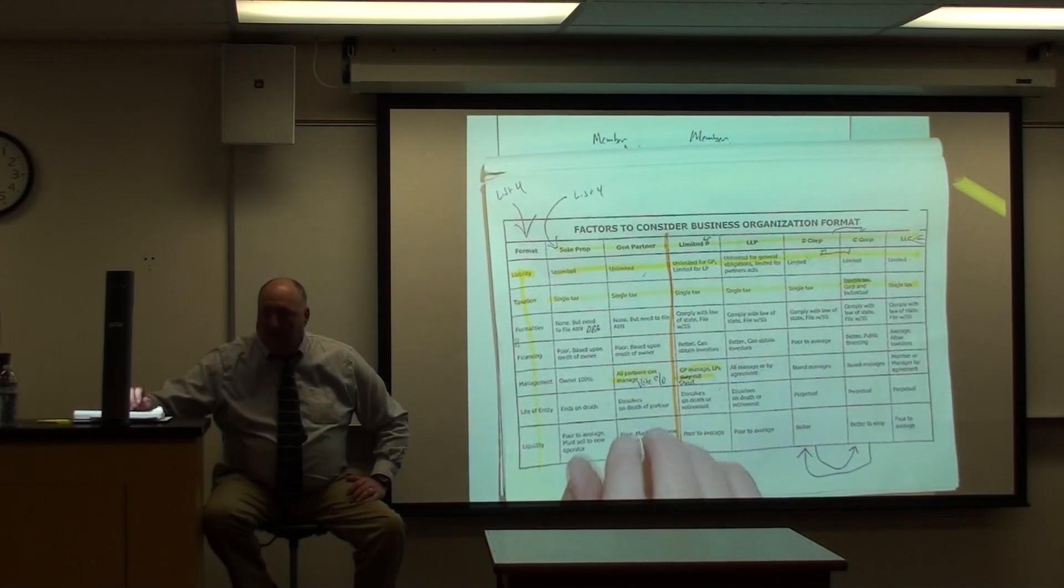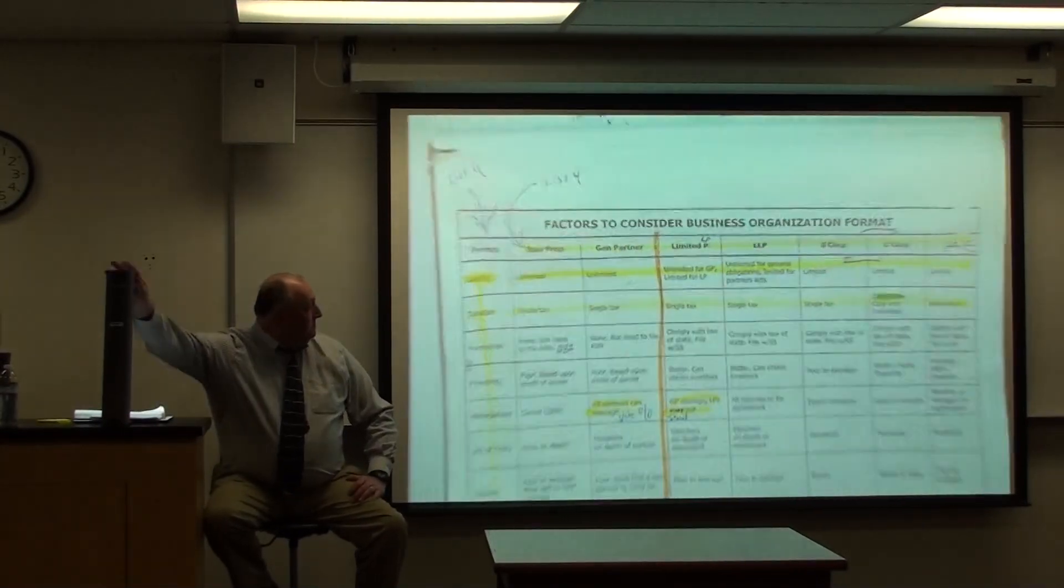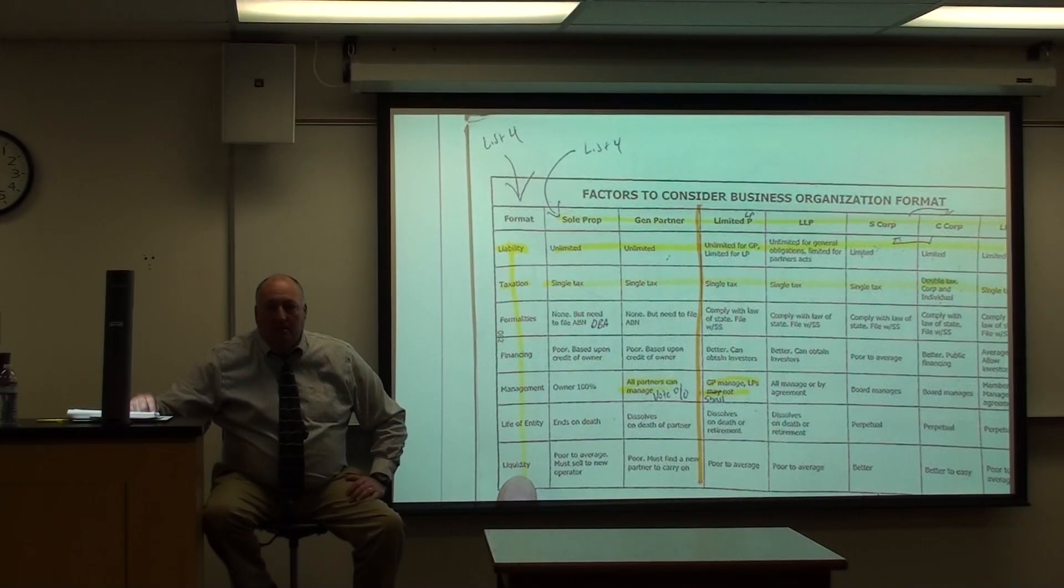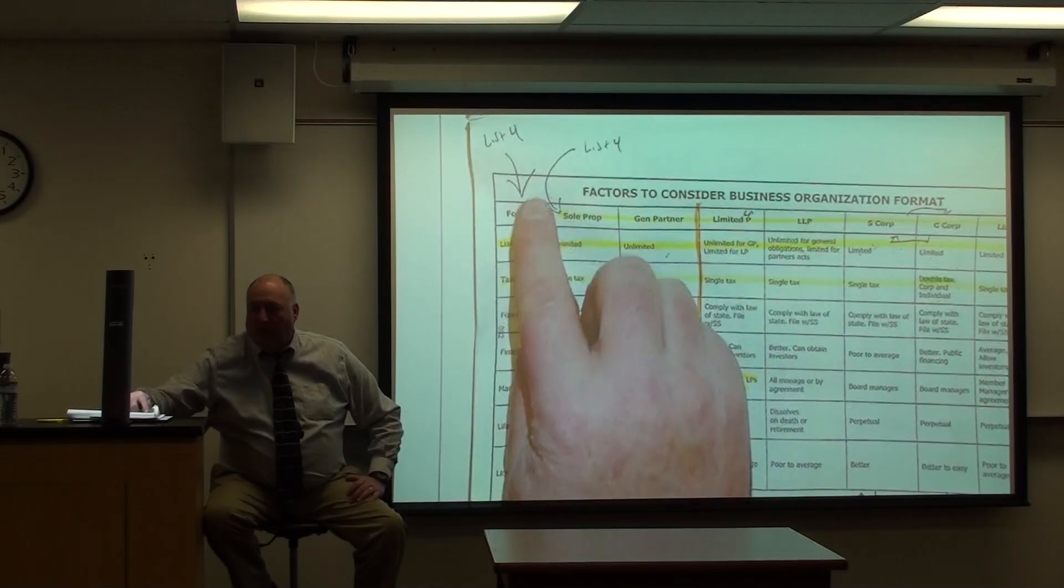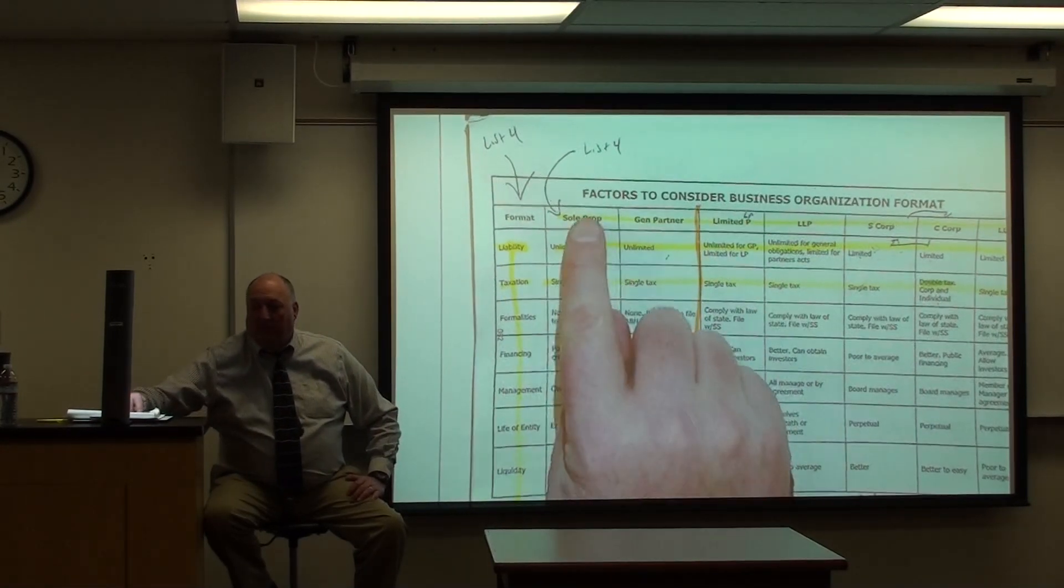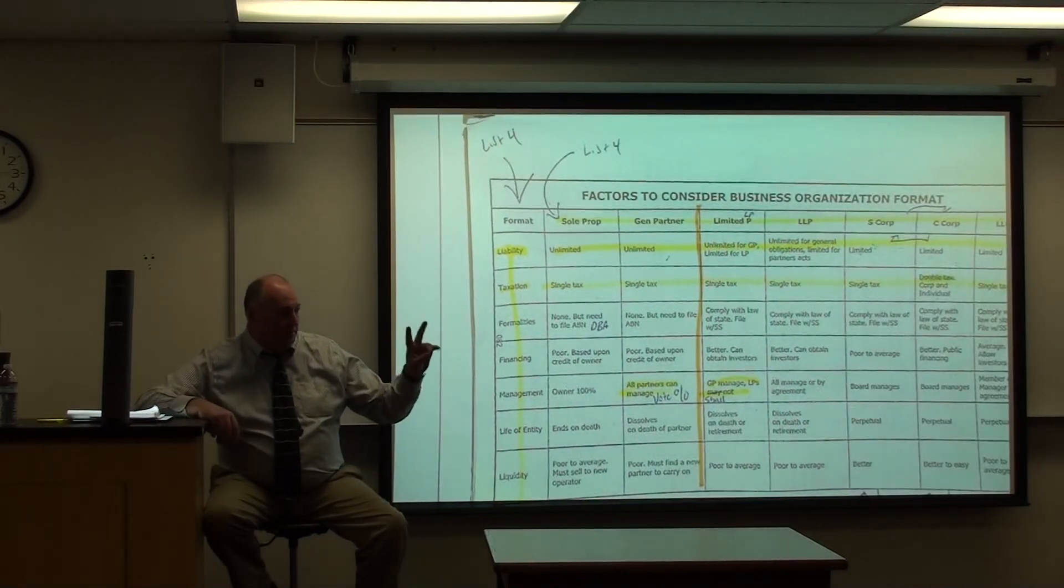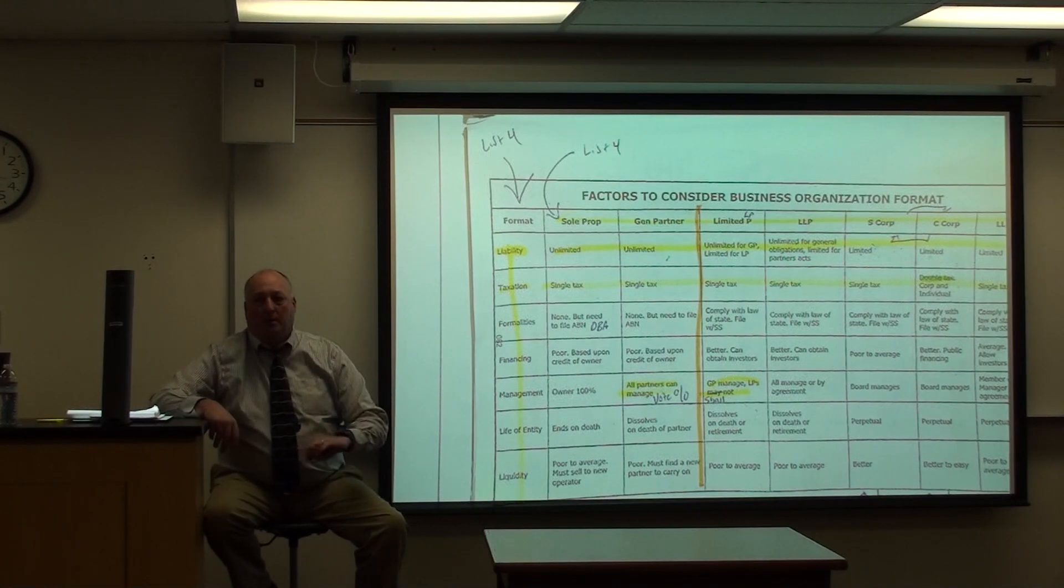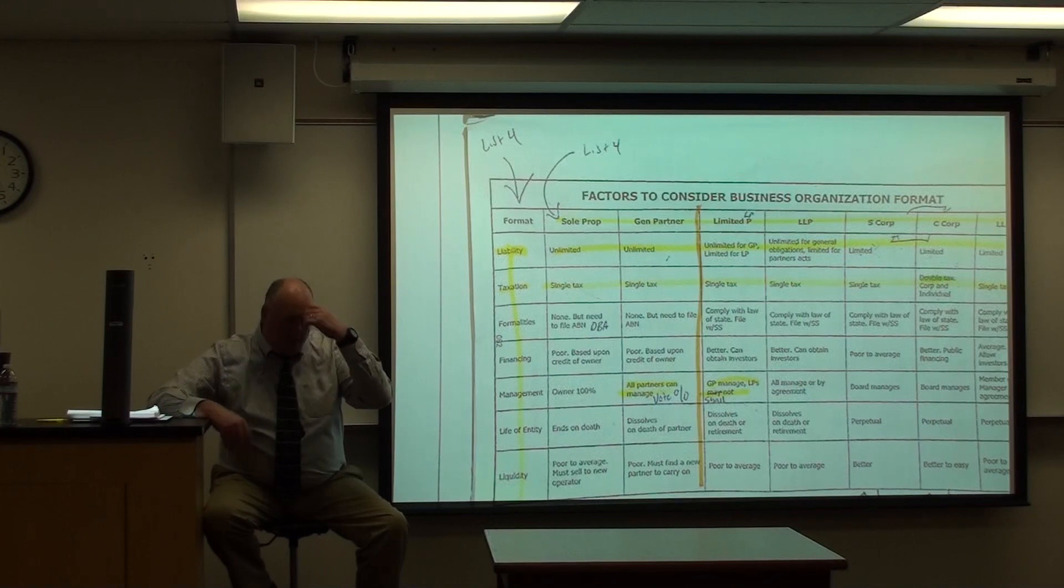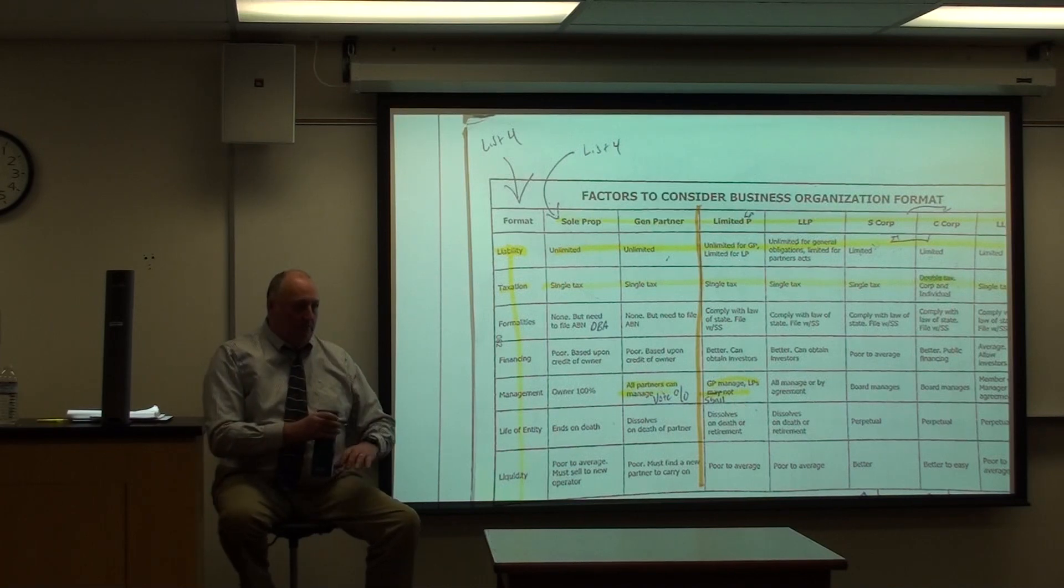Now the other question, list four of the factors, right here. List four out of these seven that you will analyze when you're deciding which of these structures you want. So list four of this column right here. And list four of this row right here. Got it? Those are the two, those are the two fill in the blank questions. And I'll be going over this again next week. Next week's our last class, but I want to make sure, make sure I did it for you all the way around. All right, does anybody have any questions about any of that?